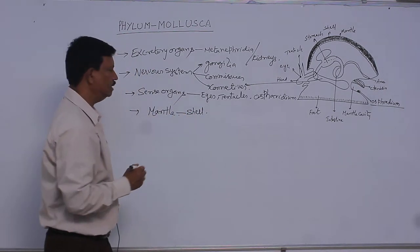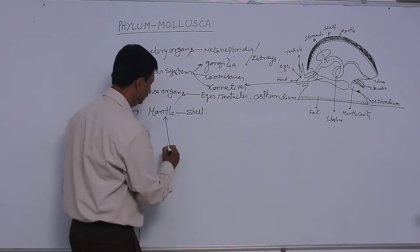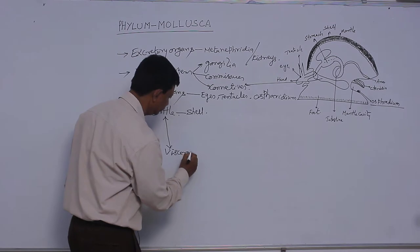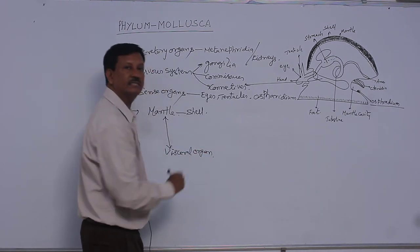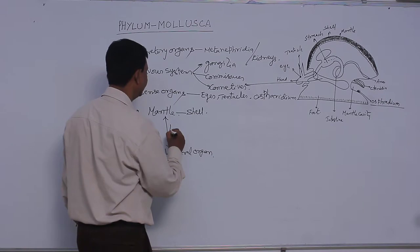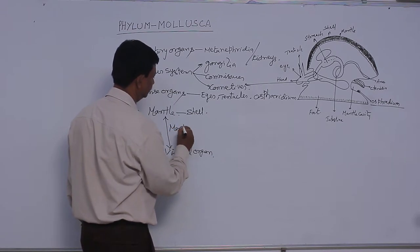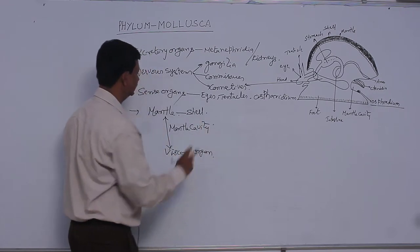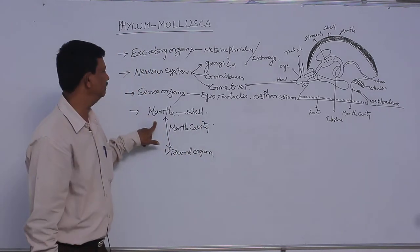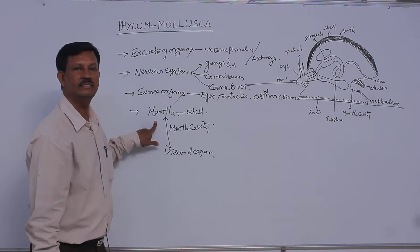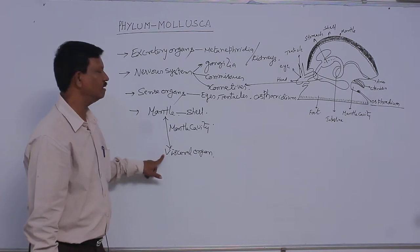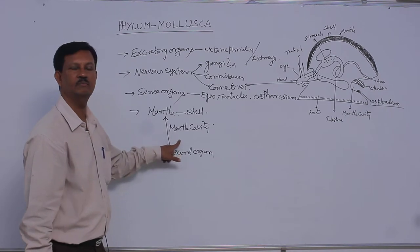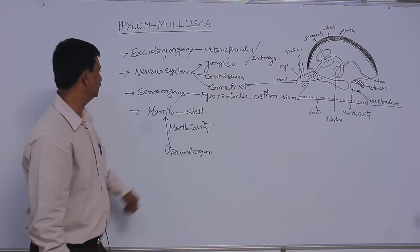In between the mantle and visceral organs, there is a cavity. This cavity is known as the mantle cavity. The body is externally covered by a thin membrane which is known as the mantle. The skin secretes the mantle and visceral organs are present inside the body. In between the mantle and visceral organs, there is an empty space which is known as the mantle cavity.